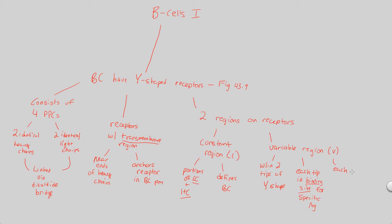Each receptor presents two identical binding sites, because we have two identical light chains and two identical heavy chains — so the tips are also identical. Both sides of the Y will bind to the same exact antigen; they will not bind to different antigens. These are two identical antigen binding sites.